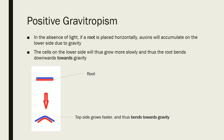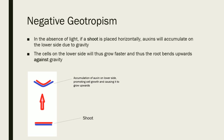In terms of negative gravitropism, this is when the plant grows away from gravity, and this is more beneficial for a shoot. In the absence of light, if a shoot is placed horizontally, the auxins will accumulate on the lower side again due to gravity, but they have a different impact here. The cells on the lower side will grow faster because this is in the shoot, and thus the shoot will bend upwards against gravity. The shoot essentially grows up against gravity, and this is therefore negative gravitropism.